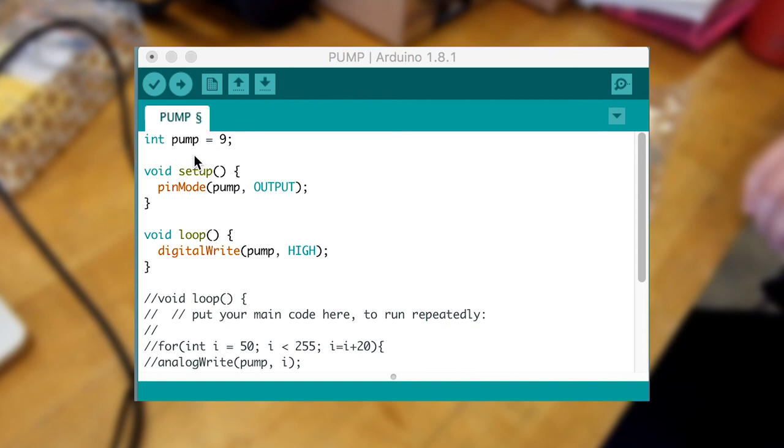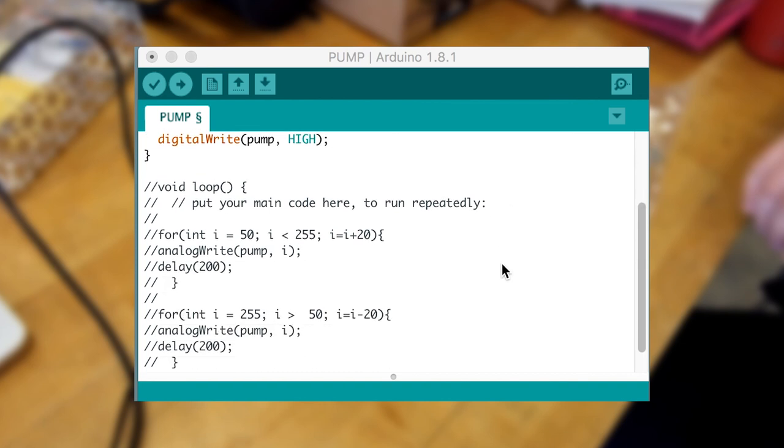We have the pump sent to pin 9, we have the pin mode set to output, and we have it digital writing high. Digital write high basically means, hey pump, run at full blast.